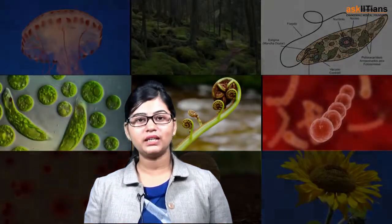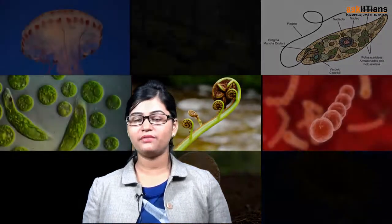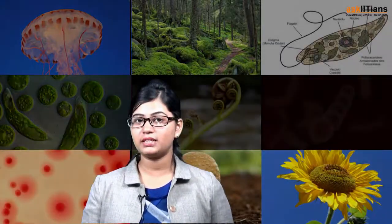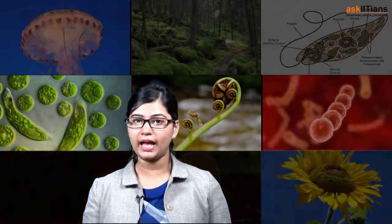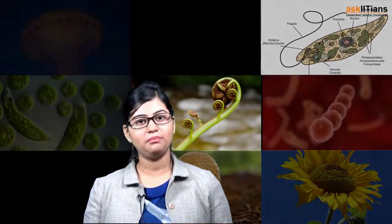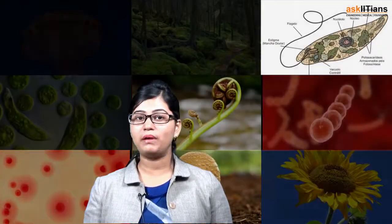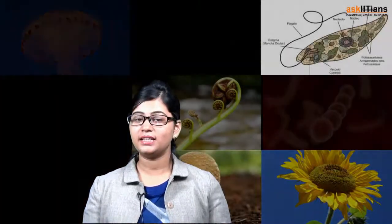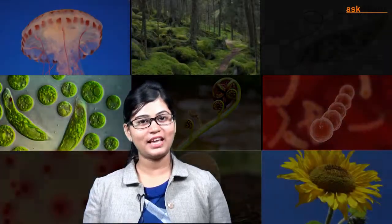In part two of classification we learned about the five kingdoms: Monera, Protista, Fungi, Animalia, and Plantae. If you want to watch more lectures on biology, physics, chemistry, and maths, then stay tuned to Ask IITians. Thank you so much.